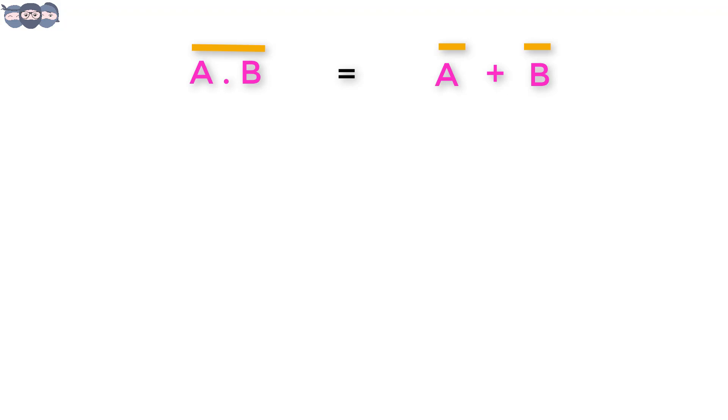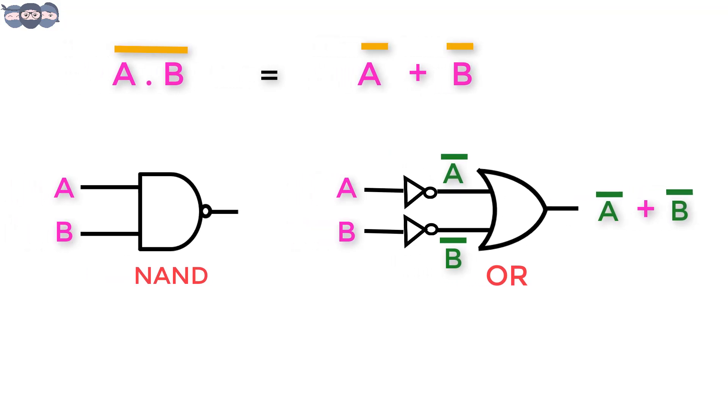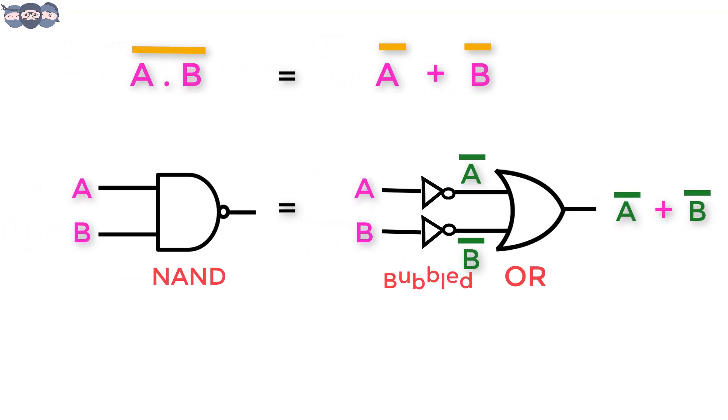Let us represent the Boolean expression using gates. A AND B bar is a Boolean expression for a NAND gate. To represent A bar OR B bar, let us first draw the OR gate. There are two inputs A and B, however both are inverted, so we connect the NOT gate. This gives us A bar and B bar. These inputs go to an OR gate. The Boolean expression is A bar OR B bar. Thus, NAND gate is equivalent to a bubbled OR gate. The bubble indicates the NOT operation.